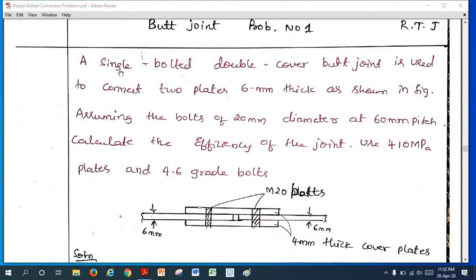The problem statement here is a single bolted double cover butt joint is used to connect two plates 6 mm thick as shown in the figure. Assuming the bolts of 20 mm diameter at 60 mm pitch, calculate the efficiency of the joint, use Fe410 that is 410 MPa plates and 4.6 grade bolts.